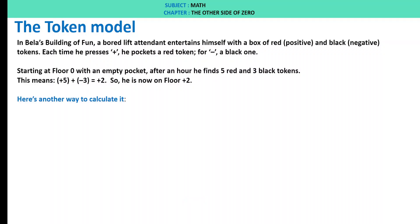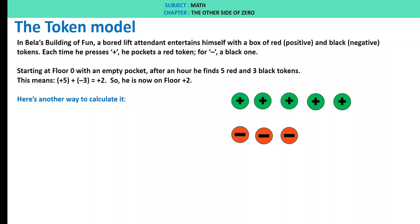Here is another way to calculate it. We add plus 5, then minus 3. We cancel out the pairs, and we are left with 2. Here plus 3 and minus 3 cancel, leaving plus 2 tokens.